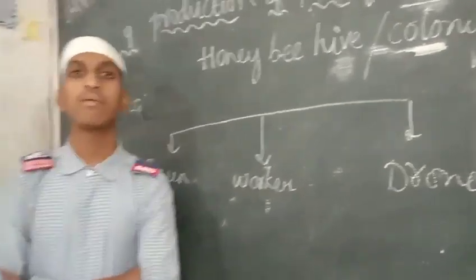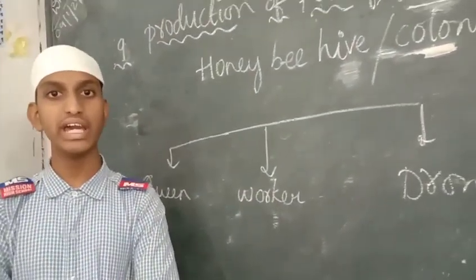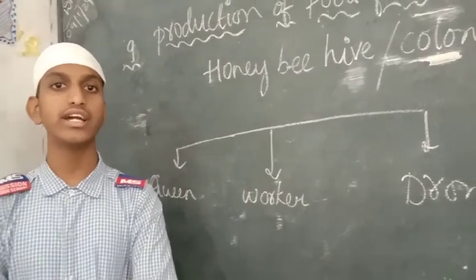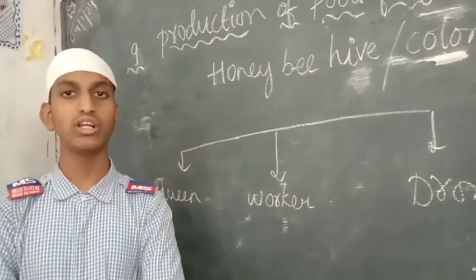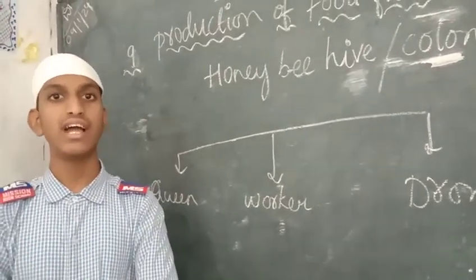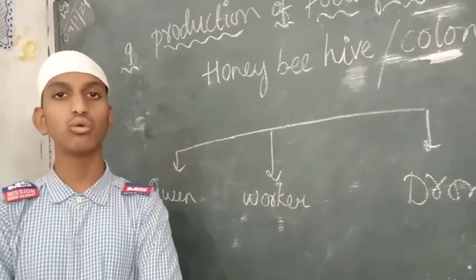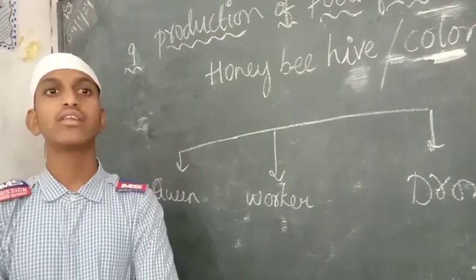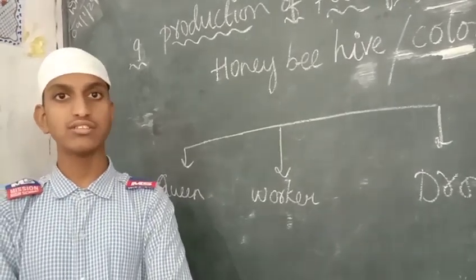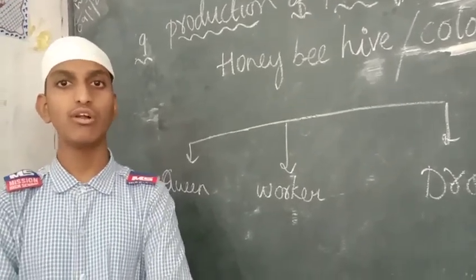The queen bee. The primary function of the queen is to lay eggs — 800 to 2000 eggs per day. The lifespan of the queen is 2 to 5 years. The queen is the fertile female of a colony.